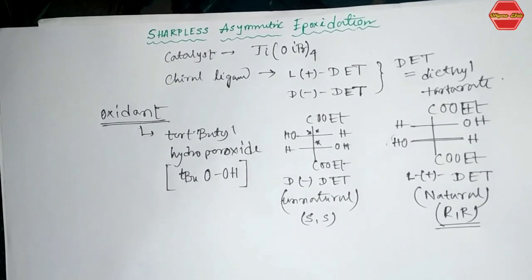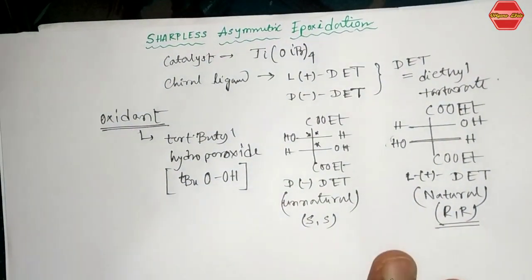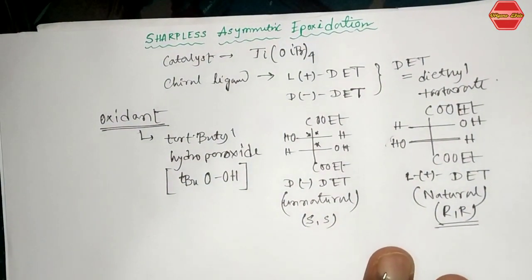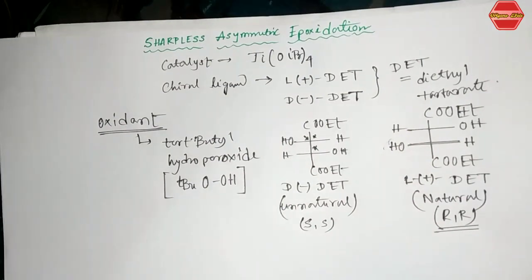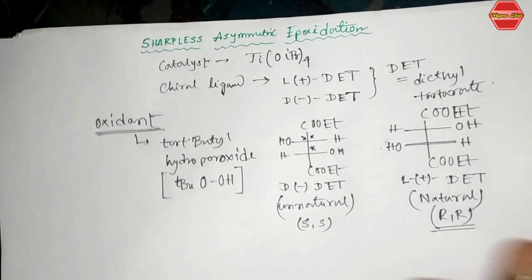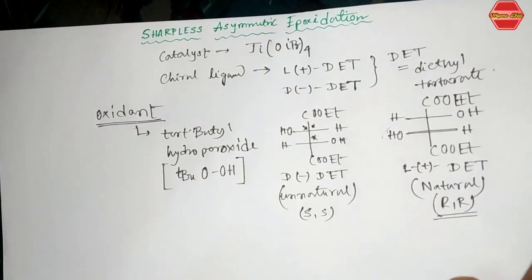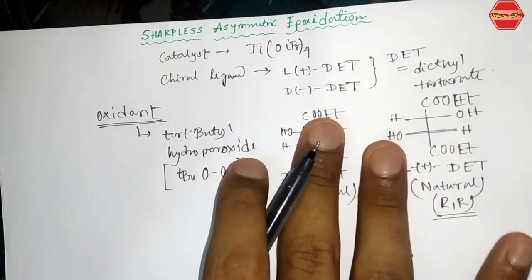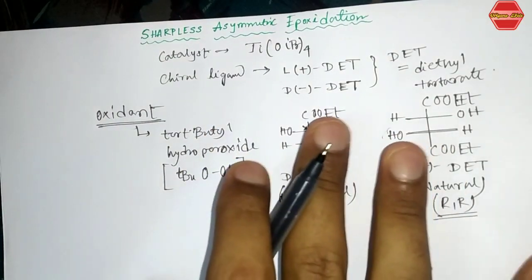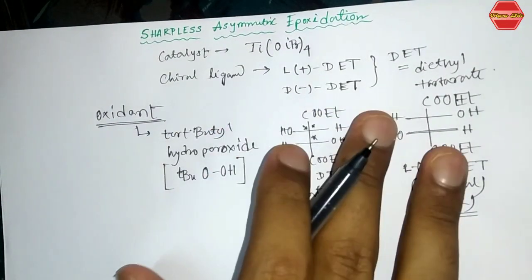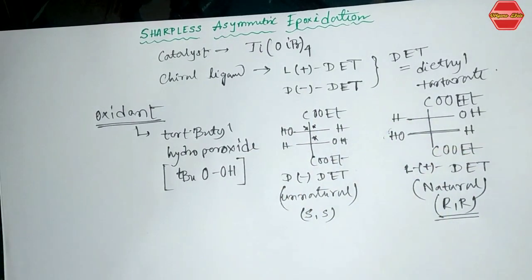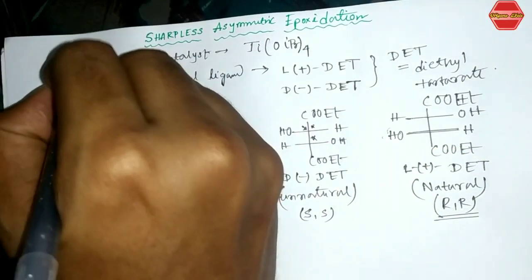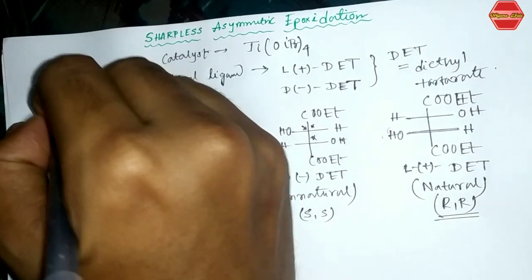Now let's look at how the reaction proceeds and the mechanism. The scientist named K. Barry Sharpless developed this reaction and received the Nobel Prize in 2001 for stereoselective oxidation reactions.